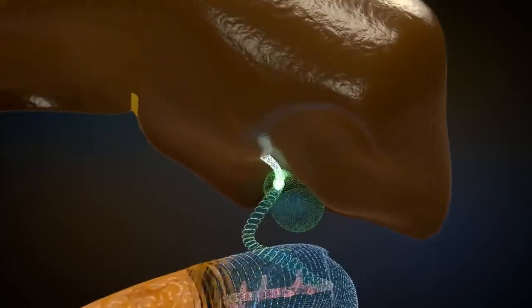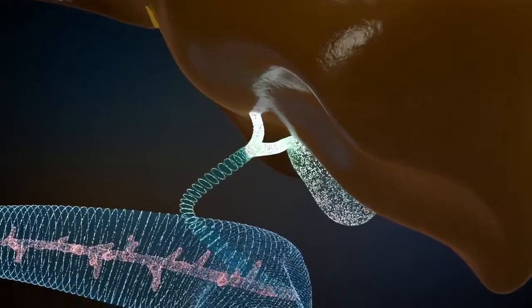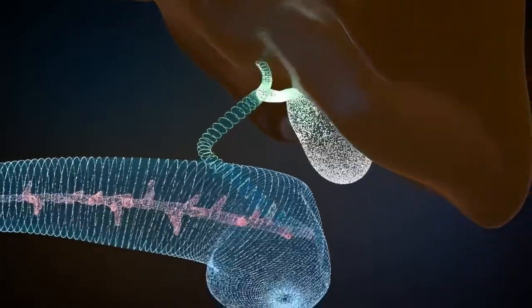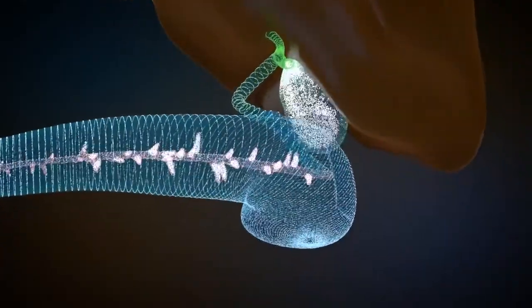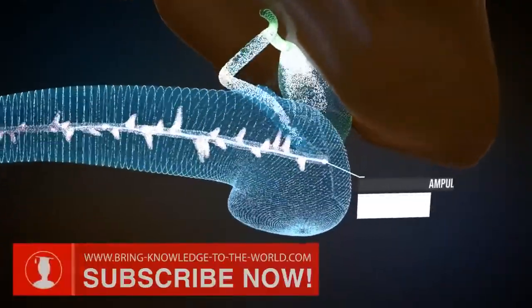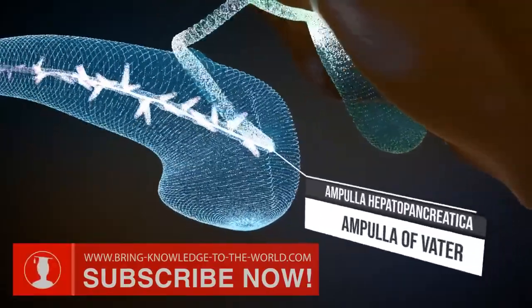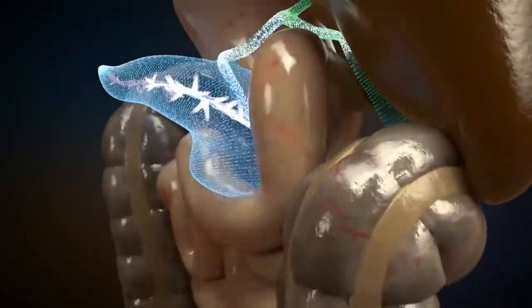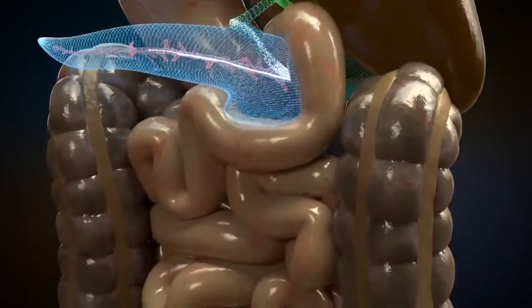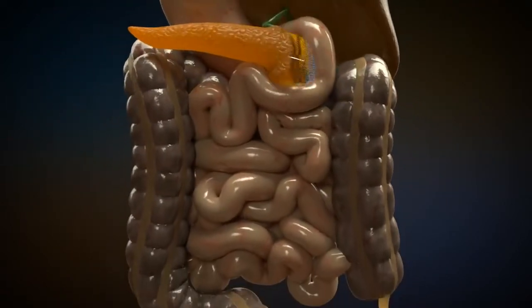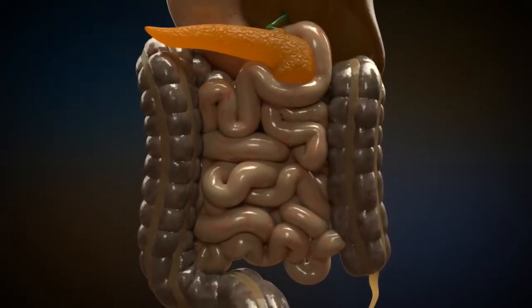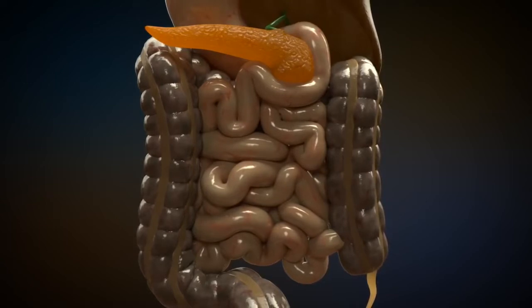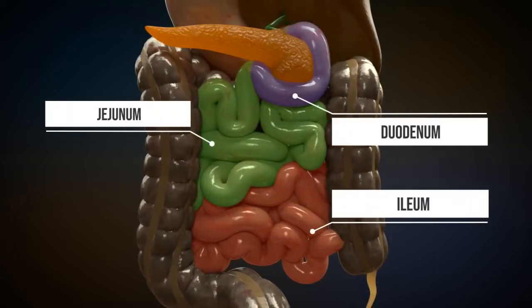The bile is produced by the liver cells and transported to the gallbladder. The bile is stored in the gallbladder and finally added to the food in the duodenum via the ampulla of Vater. The pancreas also releases juice via the ampulla of Vater. The small intestine consists of three sections: duodenum, jejunum, and ileum. The ileum continues into the large intestine in the right lower abdomen.